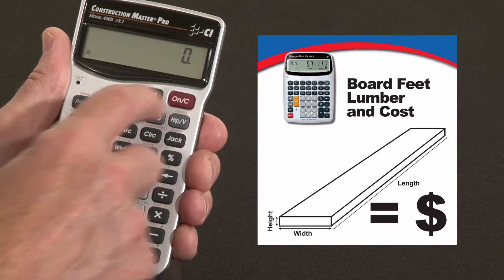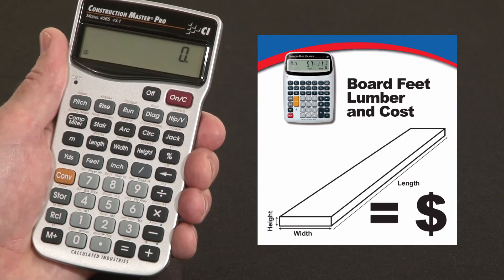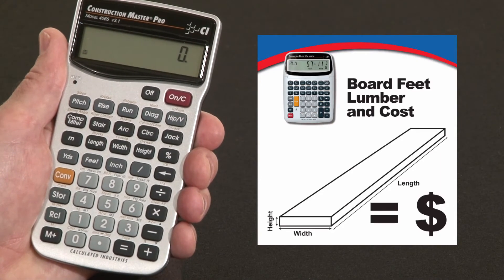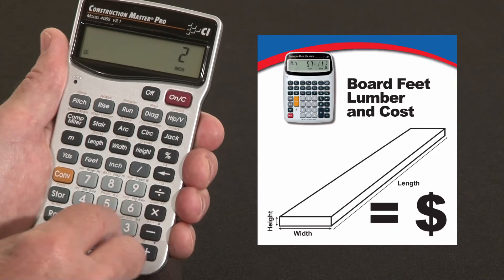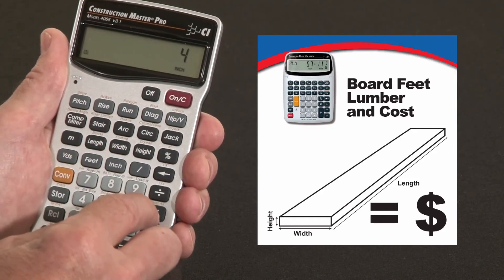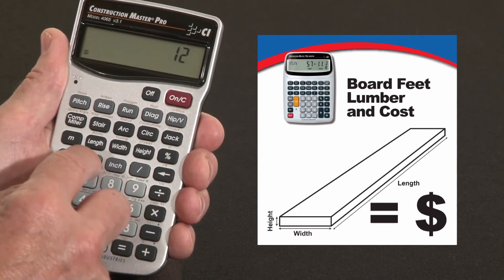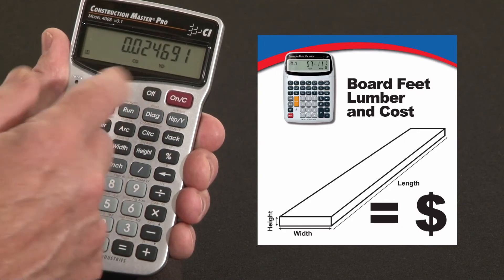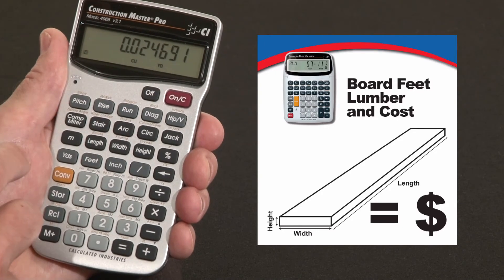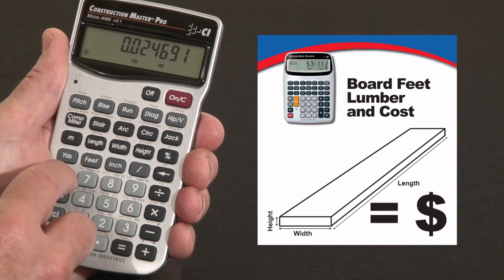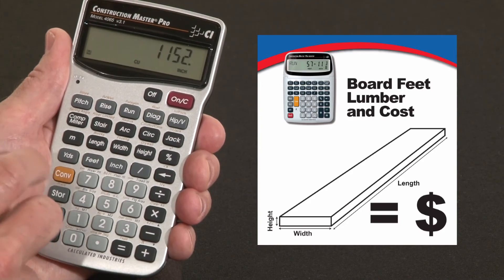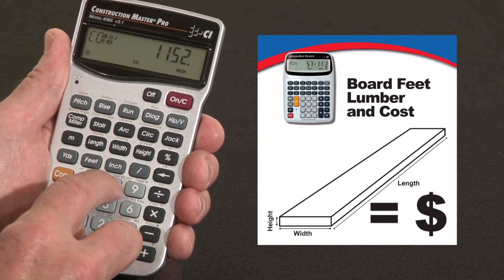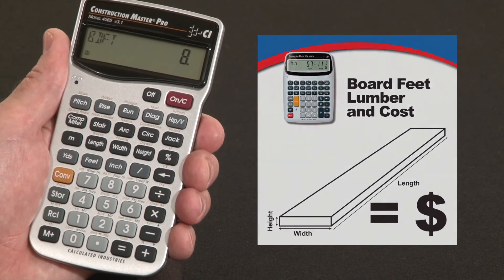You can also calculate board feet as a cubic volume number, since we know that a board foot is 144 cubic inches. Say you've got a 2 inch by 4 inch by 12 feet board. That's a whole bunch of cubic yards, which is really irrelevant in this example. You can convert that to cubic inches if you like, but more appropriately, convert to board feet — the same 8 board feet.